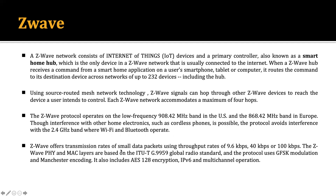Z-Wave offers transmission of small data packets at throughput rates of 9.6 kbps, 40 kbps, and 100 kbps. The Z-Wave physical and MAC layer is based on ITU-T G.9959 Global Radio Standard, not IEEE 802.15.4.